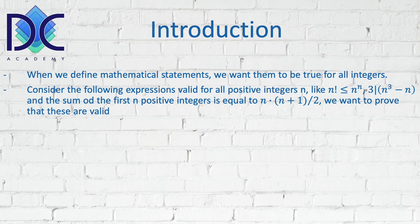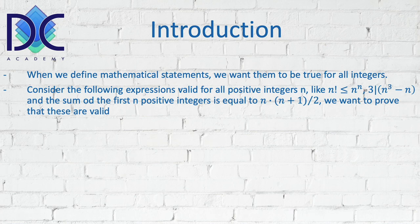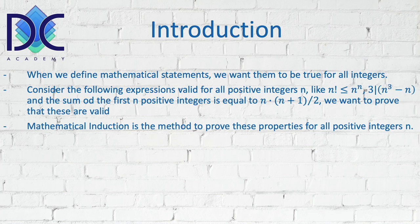Let's look at some possible expressions that we have proven to be true for all positive integers. For example: n factorial is smaller than or equal to n to the power n; 3 divides n cubed minus n; and the sum of the first n positive integers equals n times (n+1) divided by 2. We want to prove these expressions are valid for all positive integers — that's where we use mathematical induction.